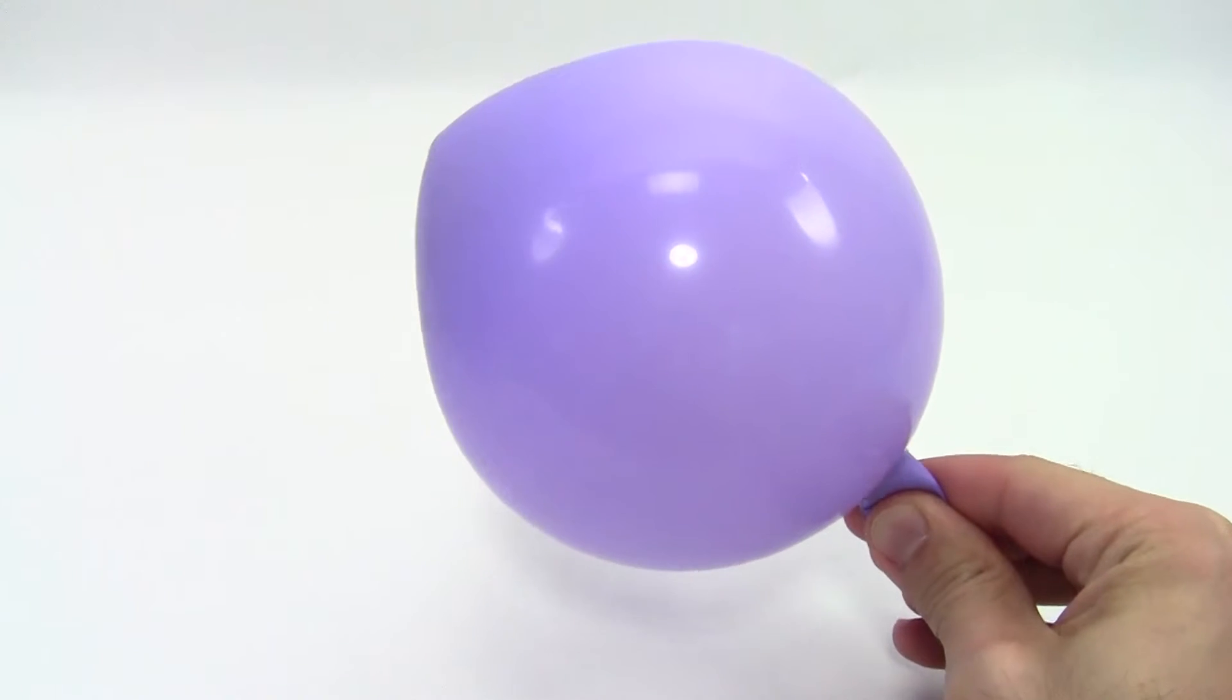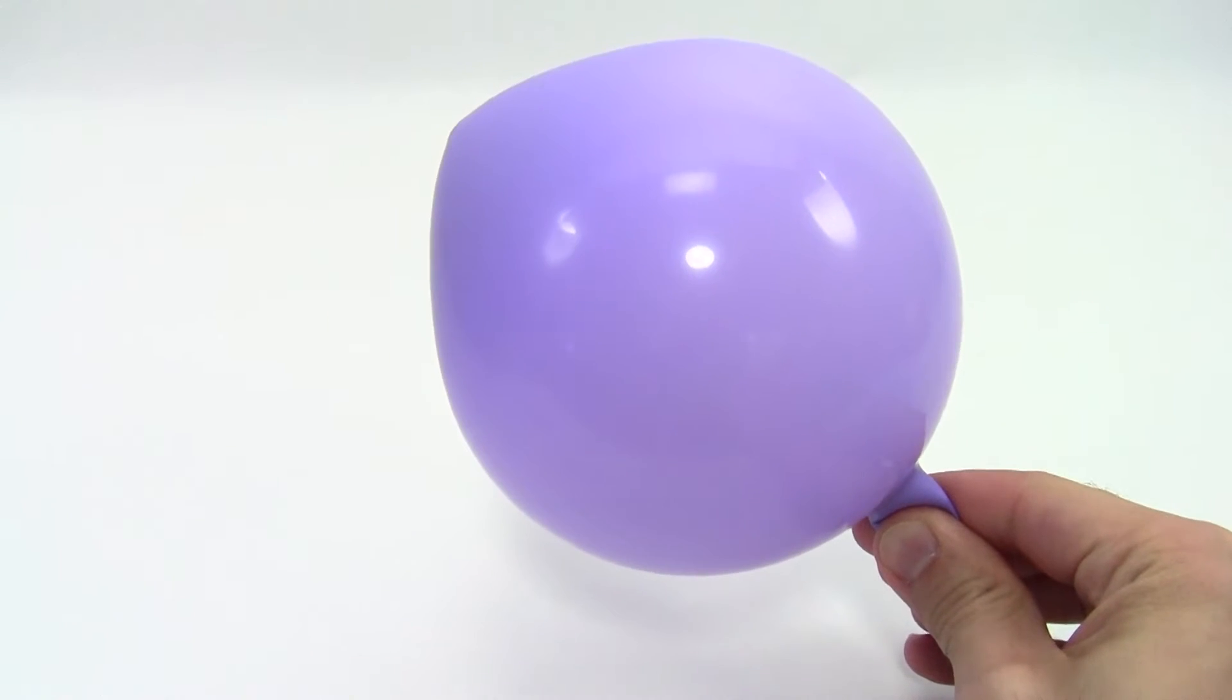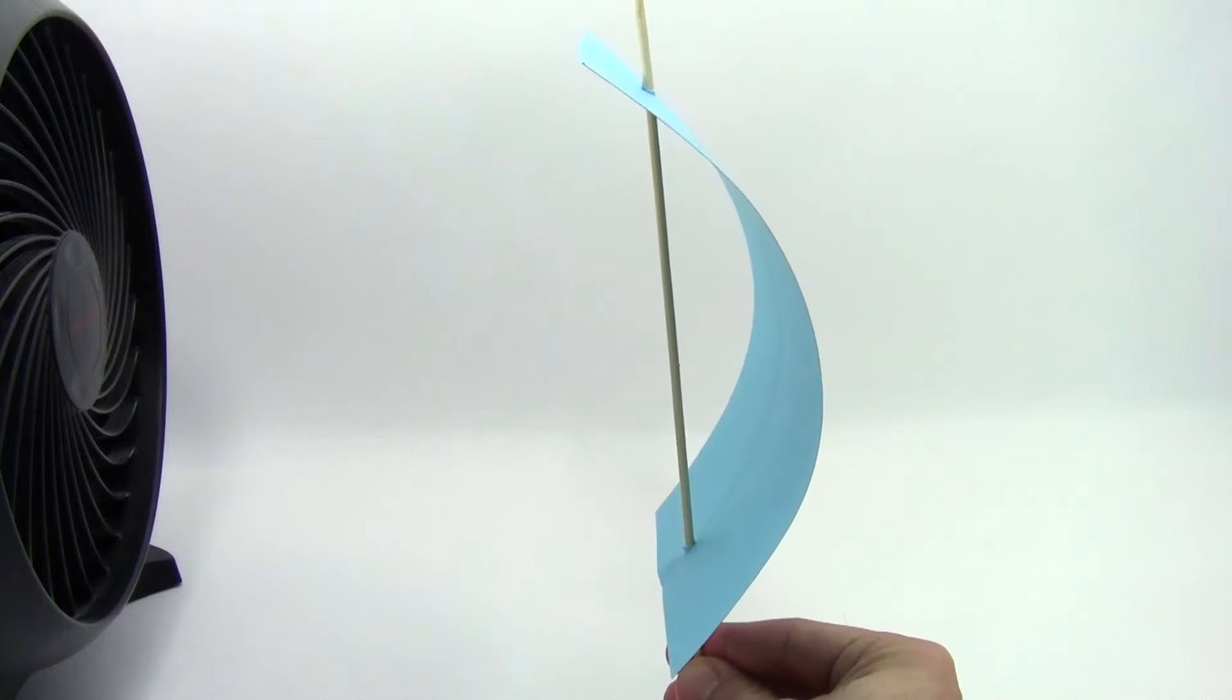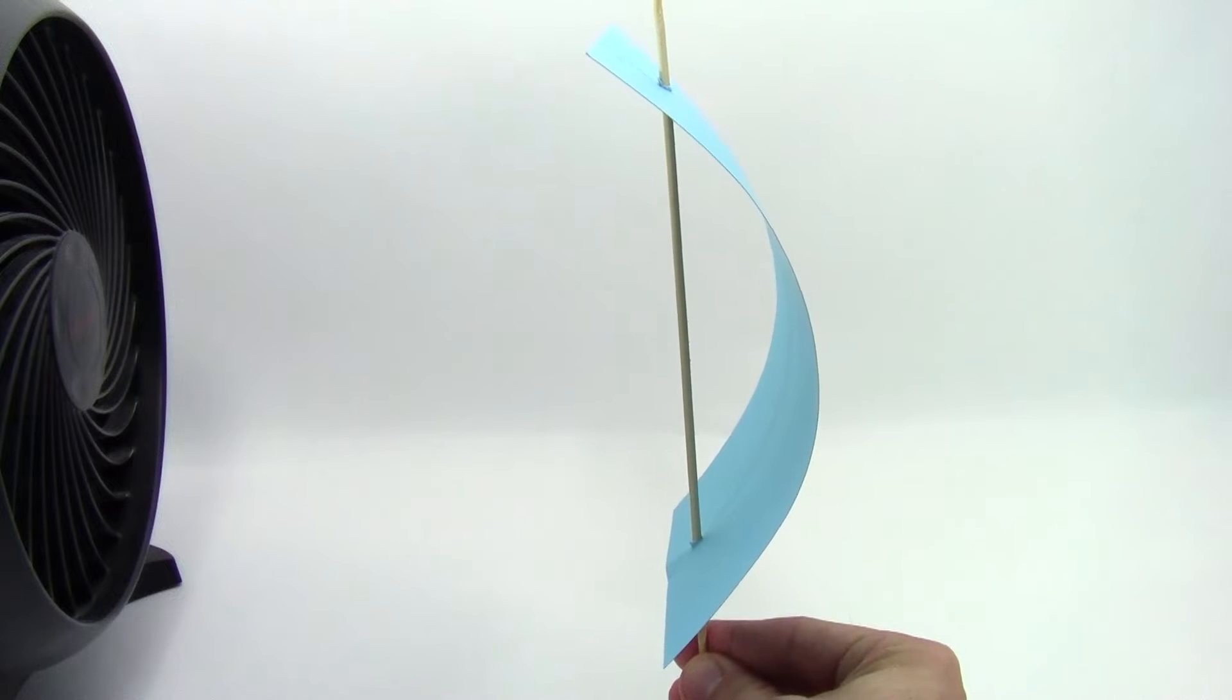You can also make a car that is powered by air escaping from a balloon, a stretched rubber band, or even a sail that catches the wind.